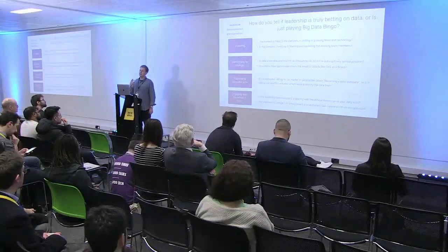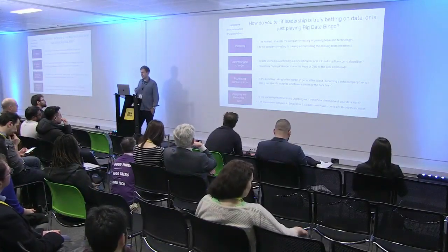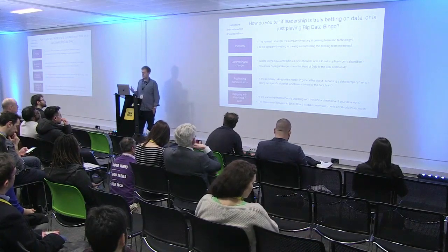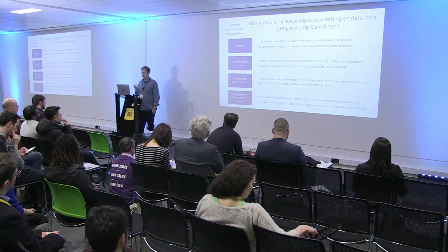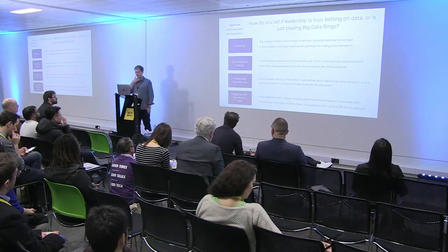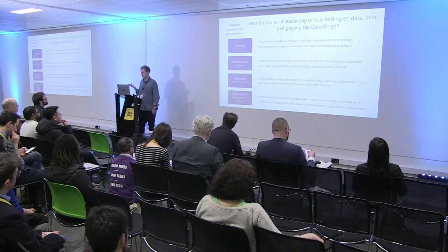The last heuristic, which is really crucial, is the ethical side. Is the leadership team seriously grappling with the ethical dimension - what are the likely second and third order impacts of the work you're doing, the data products you're creating? The recent implosion of Google's AI ethics board is a good cautionary tale: it was fundamentally created as a PR-led approach rather than actually creating decision-making power around AI and the ethical side of that.